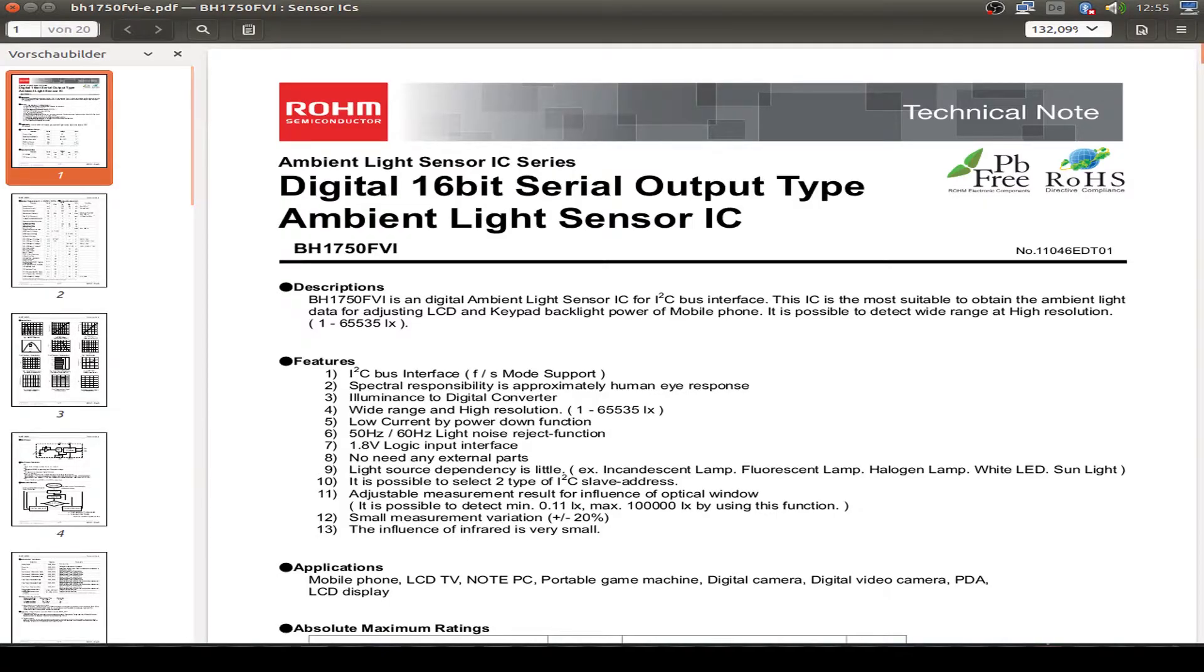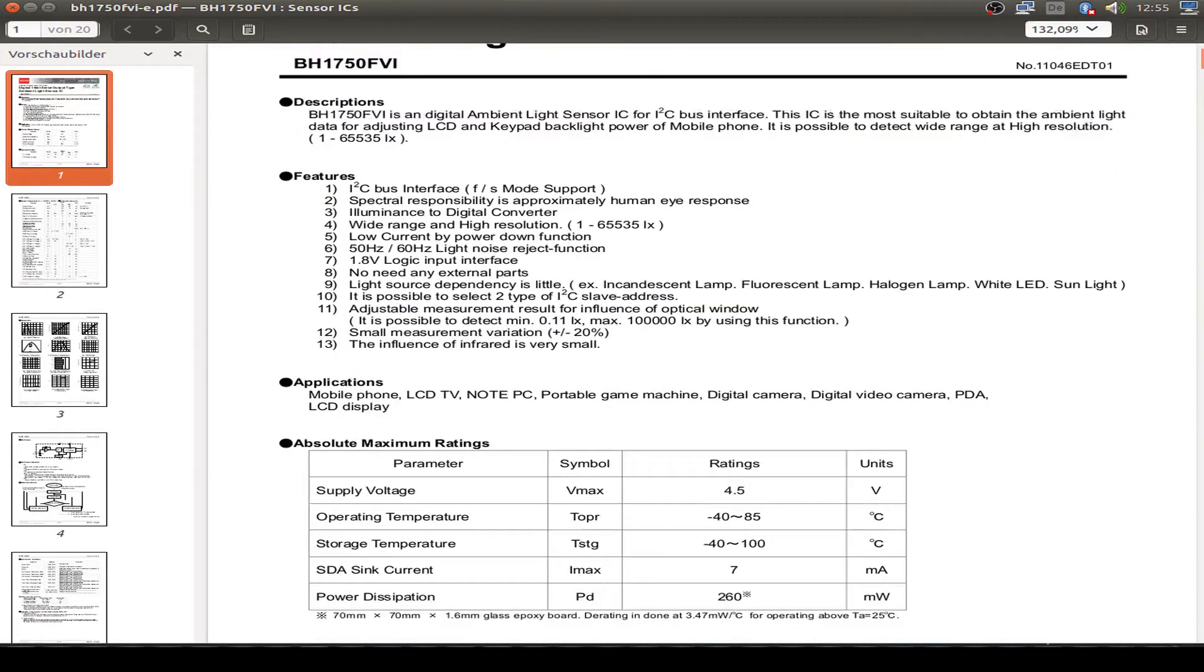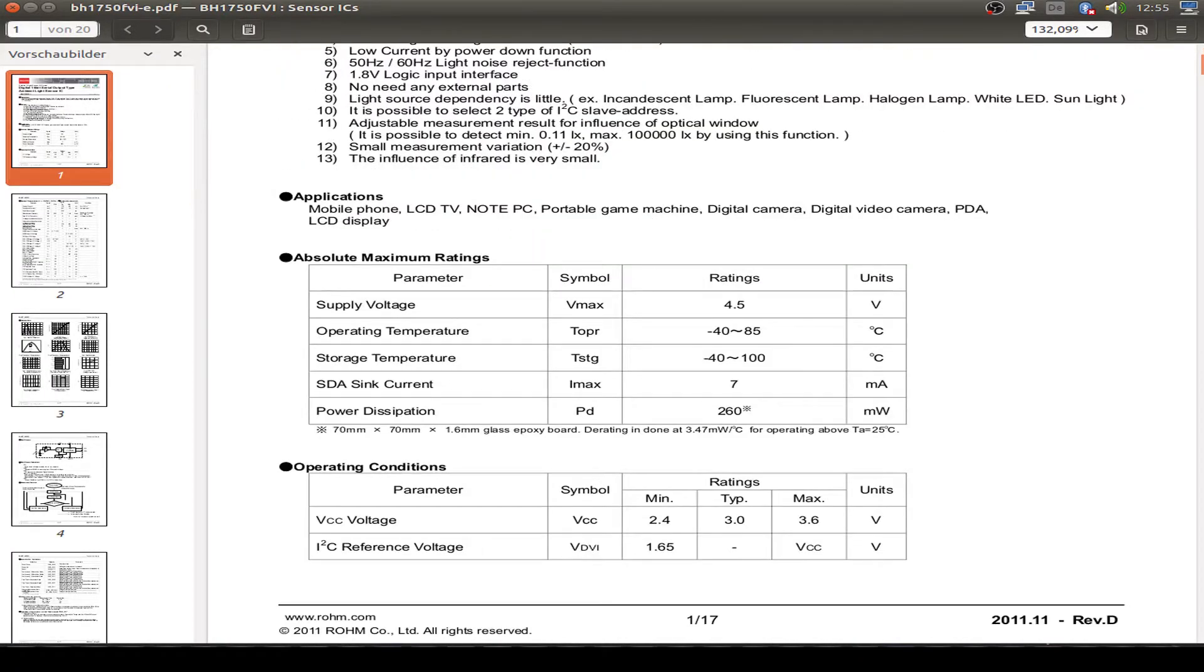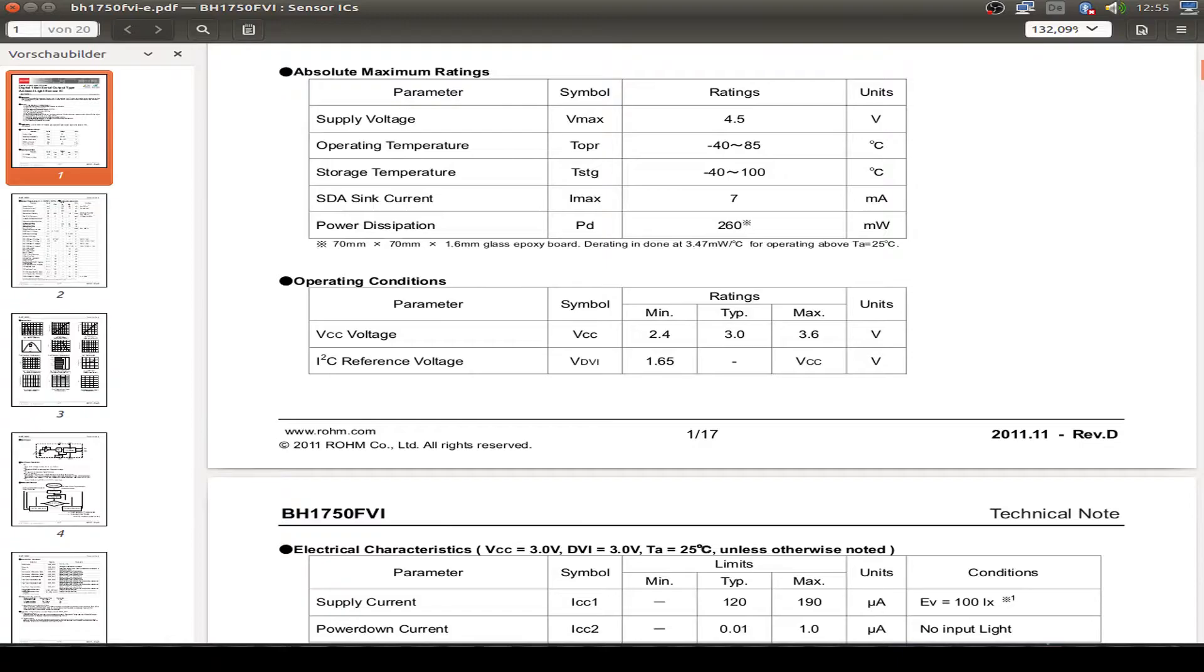Now let's have a brief look into the data sheet. This is the ambient light sensor with the I2C interface and we can use it direct from our 3.3 voltage from our ESP32.